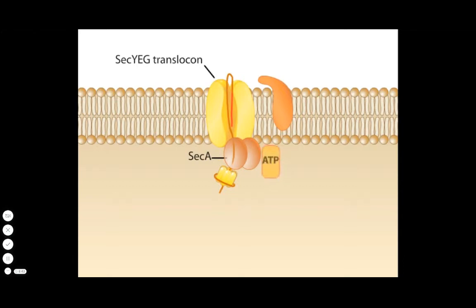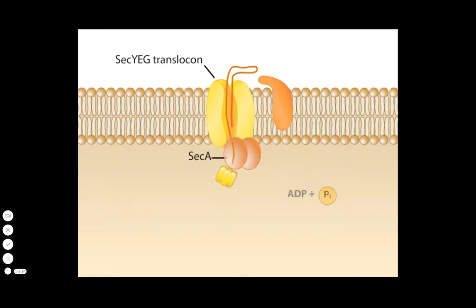At this point, SecA can bind fresh ATP, rebind the target protein, and reinsert, pushing another 20 amino acids through.